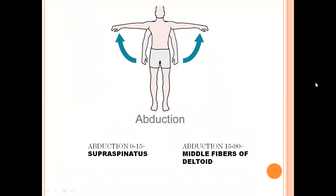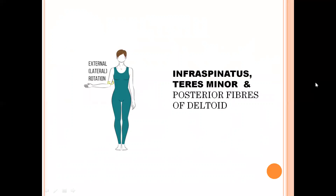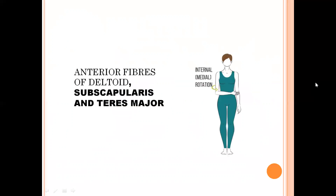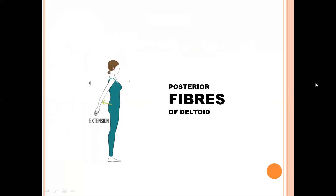All three fibers of deltoid have different actions. Middle or multipinnate fibers, also known as acromion fibers, are the abductors of arm from 15 to 90 degrees. Anterior fibers are responsible for flexion and medial rotation of arm. Posterior fibers are responsible for extension and lateral rotation of arm. This is the anterior deltoid originating from the clavicle, medial deltoid originating from the acromion process, and posterior deltoid originating from the crest of the spine of scapula.